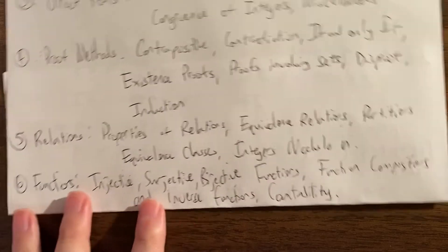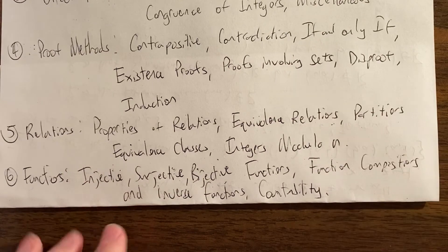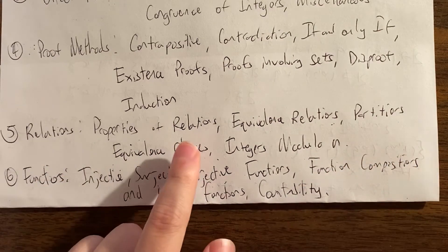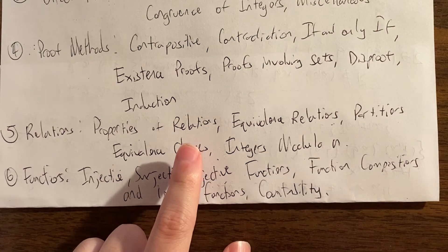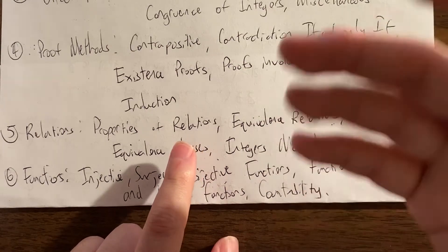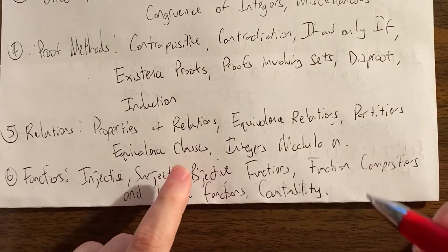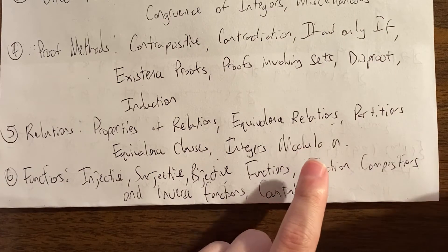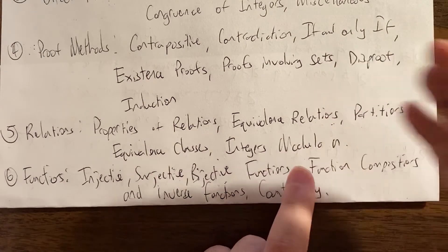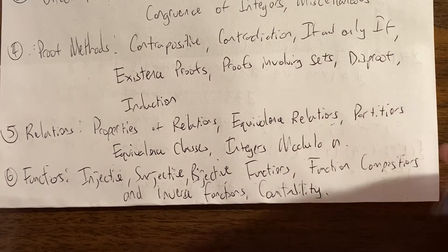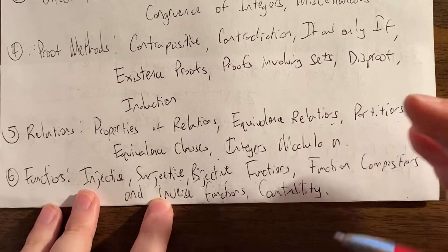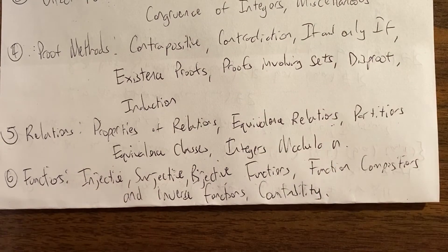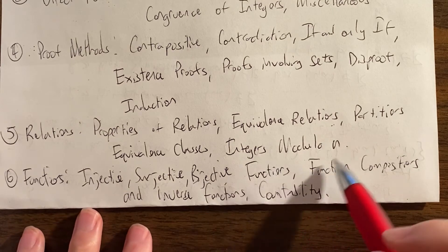Then we talk about two concepts: we talk about relations, and we talk about the properties of relations, the main ones being reflexive, symmetric, and transitive. Then those properties — if a relation has those three properties, those are equivalence relations, so we practice those. Then we see the relationship between partitions and equivalence classes and equivalence relations, and we give the example of integers modulo n.